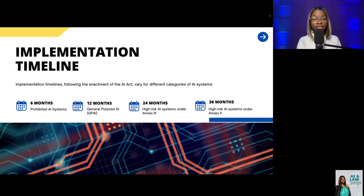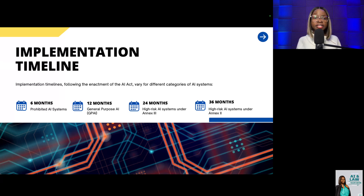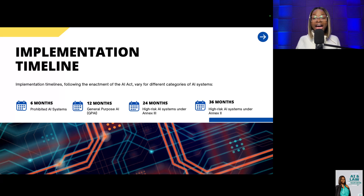Regarding the implementation timeline: following the enactment of the AI Act, timelines vary for different categories. 6 months for prohibited AI systems, 12 months for general-purpose AI, 24 months for high-risk AI systems under Annex 3, and 36 months for high-risk AI systems under Annex 2.